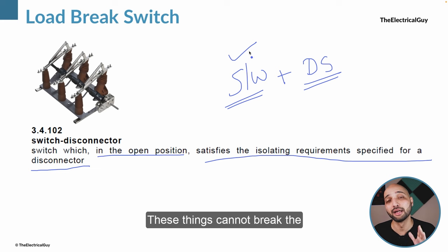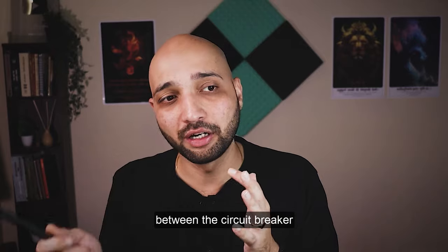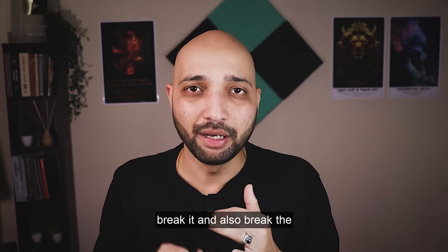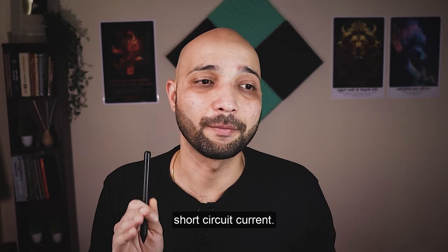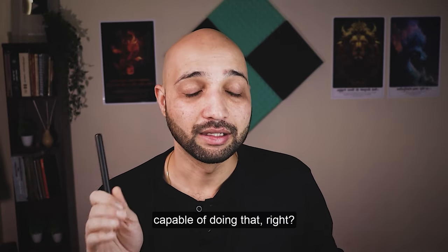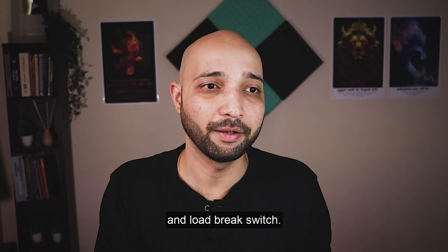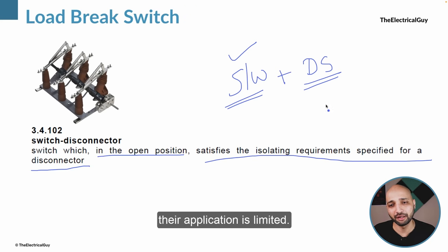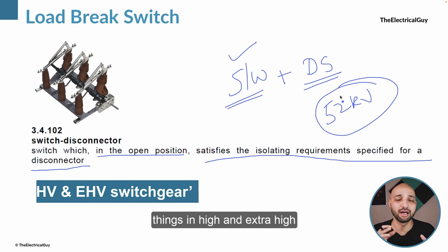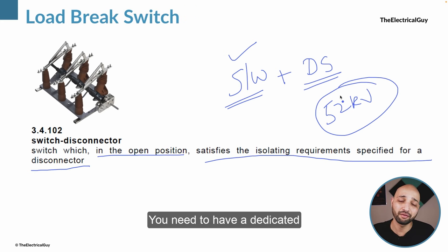Load break switches cannot break the short circuit current — keep that in mind. That is the key difference between the circuit breaker and the load break switch. A circuit breaker is able to make and break normal system current and also break short circuit current. A load break switch or switch disconnector is not capable of doing that. Also, the application of load break switches is limited to 52 kV, which is the distribution level only. At high and extra high voltage you need a dedicated isolator and a dedicated circuit breaker.